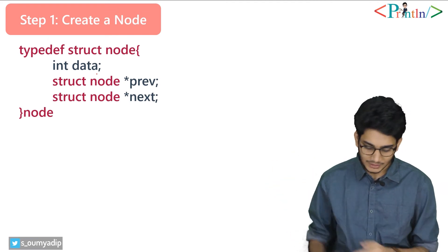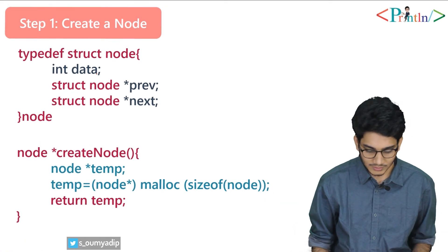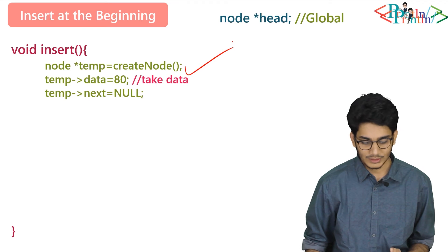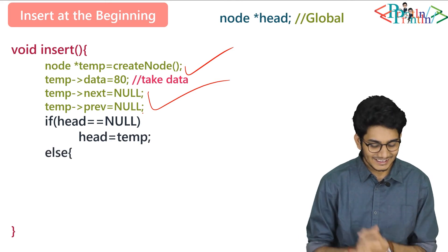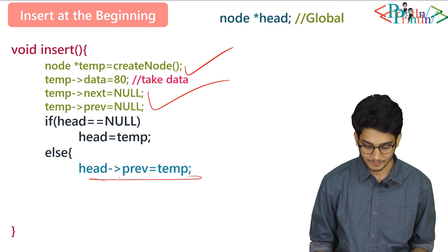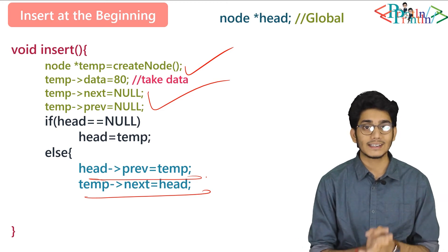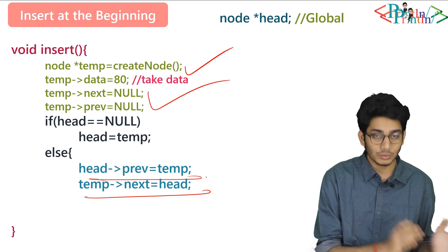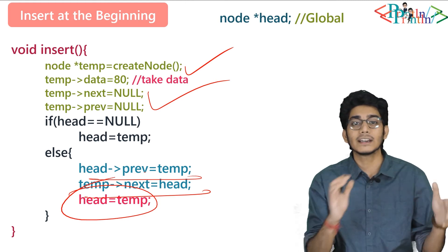We have to create a node — we allocated two pointers, one is prev and another one is next, and we have data over here. Then the create node function uses malloc. We have to allocate the memory, take the data, and set temp next and temp prev to null. If head equals to null, this is the global condition. Else: head prev equals to temp, then temp next equals to head. At first, set the prev of the first node to temp, then assign the address of the head node to temp next, then make head equals to temp. This is how we can add any element at the beginning of a doubly linked list.